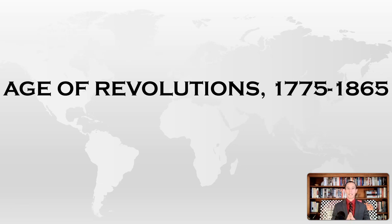Beginning in 1775, the world will go through what is generally referred to as the Age of Revolutions. During this period, revolutionary movements will spring up all over the world, especially in the Americas and in Europe. The common theme of these revolutions is the movement away from monarchies to representative governments with a written constitution.